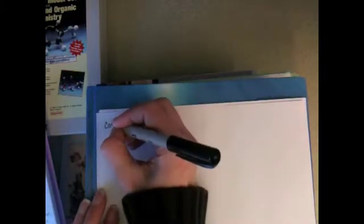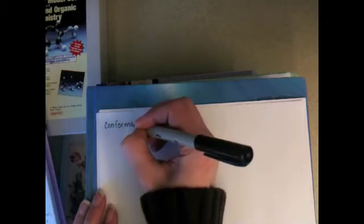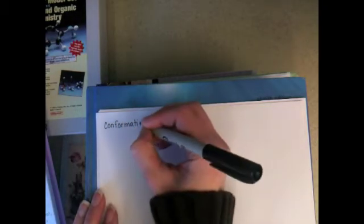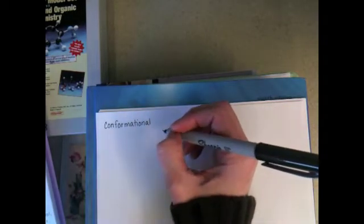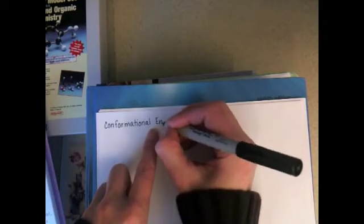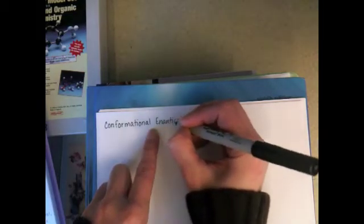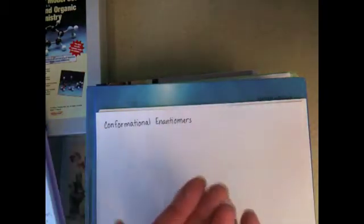There are some rare examples of molecules that appear to be achiral because they have no chiral carbons, but they actually end up being chiral because due to the structure of the molecule and inability to rotate around single bonds or the existence of double bonds, the molecule ends up being not superimposable on its mirror image.